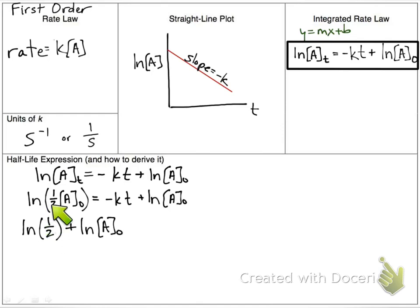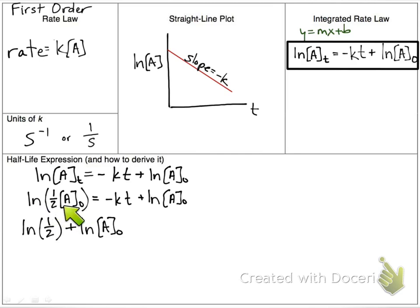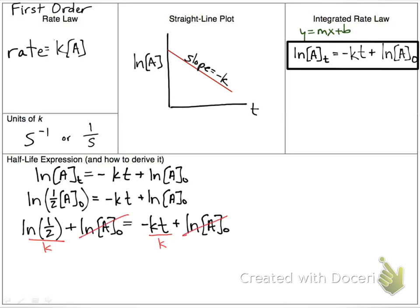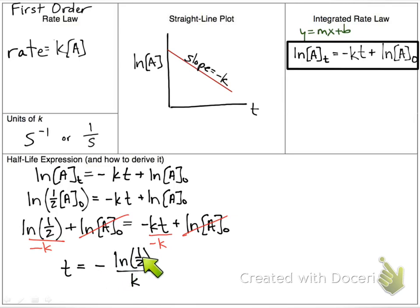The natural log of two things multiplied together — one-half times initial concentration — can be rewritten as natural log of one-half plus natural log of the initial concentration. The natural log of initial concentration appears on both sides, so those cancel out by subtracting. Then dividing both sides by negative k, we get: time equals negative natural log of one-half over k.